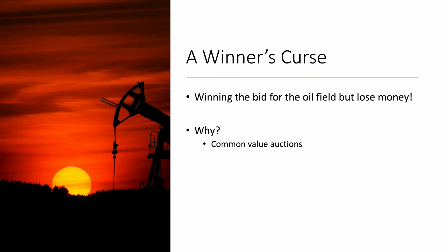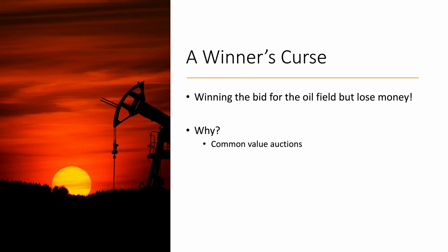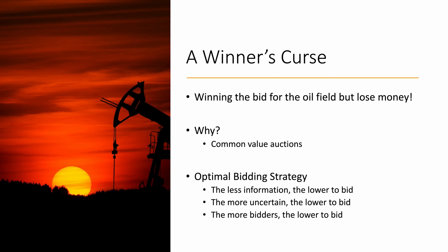How do we avoid the winner's curse? Commonly, bidders in such auctions intentionally bid below their valuation. For example, if you go to bid on an oil field and your estimated value of the reserve is $10 billion, professional bidders — based on experience and historical data — would intentionally bid down and not bid above, say, $8 billion. They always bid at least 20% below their willingness to pay. The general strategy in a common value auction is: the less information you have about the product, the lower you should bid; the more uncertain you are about the valuation, the lower you should bid; and the more bidders there are, the lower you should bid.